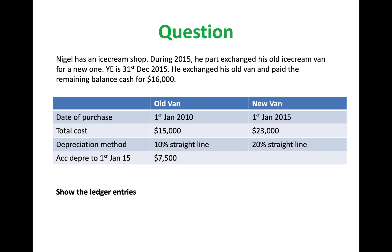Now let's look at a question together. Nigel has an ice cream shop. During 2015, he part exchanged his old ice cream van for a new one. The year end is the 31st of December 2015, and he exchanged his old van and paid the remaining balance in cash for $16,000.